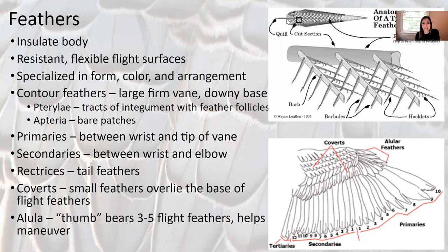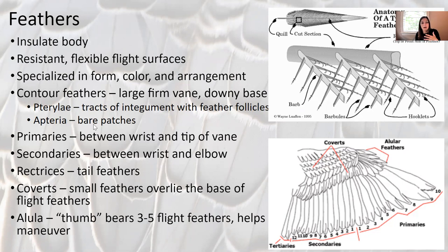There's a downy base on contour feathers. There are places on birds that have feathers and places that don't. The tracks of integument that have feathers are called pterylae, and apteria is where there are bare patches. Certain birds have bare patches all the time, and a brood patch is a place that becomes bare when a female is incubating eggs.